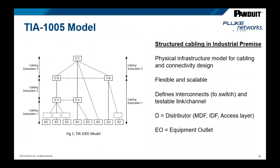TIA-1005A defines a basic architecture for the structure of cabling and connectivity in the industrial premises. Starting at the bottom, EO stands for equipment outlet. There are two and sometimes three sets of patching systems or distributors — depicted as distributor A, B, and C — on the way up to the network core at the top. Distributor C and its patch panels would be co-located with the actual network core equipment in a telecom room.